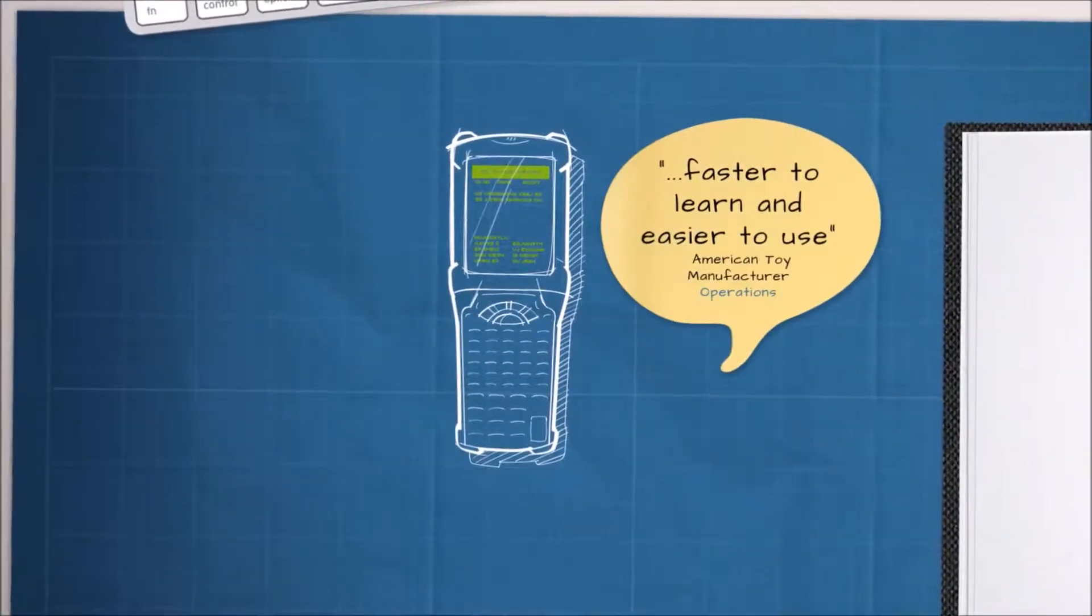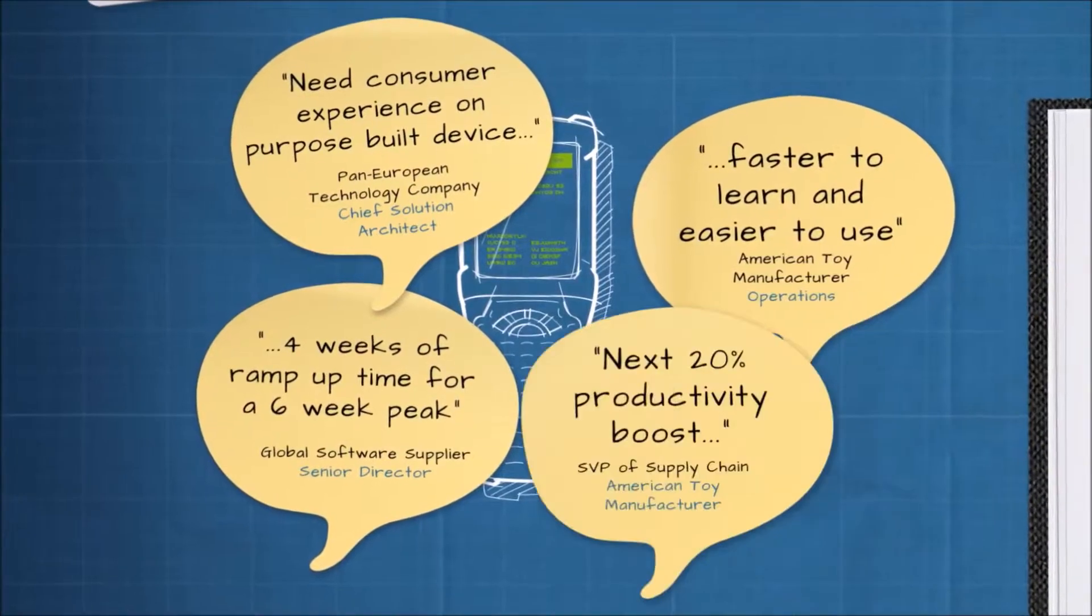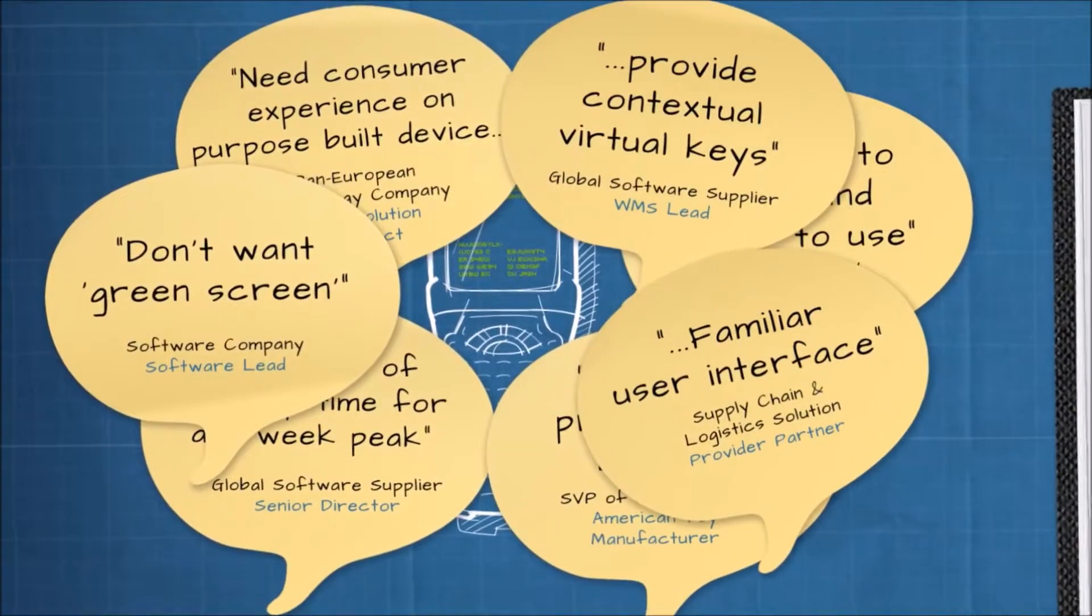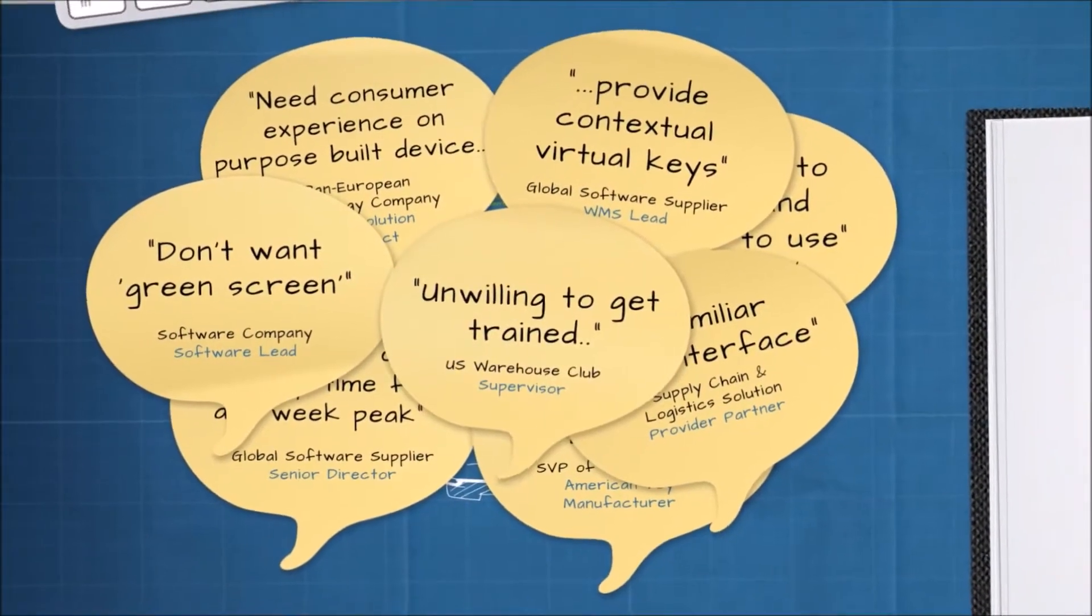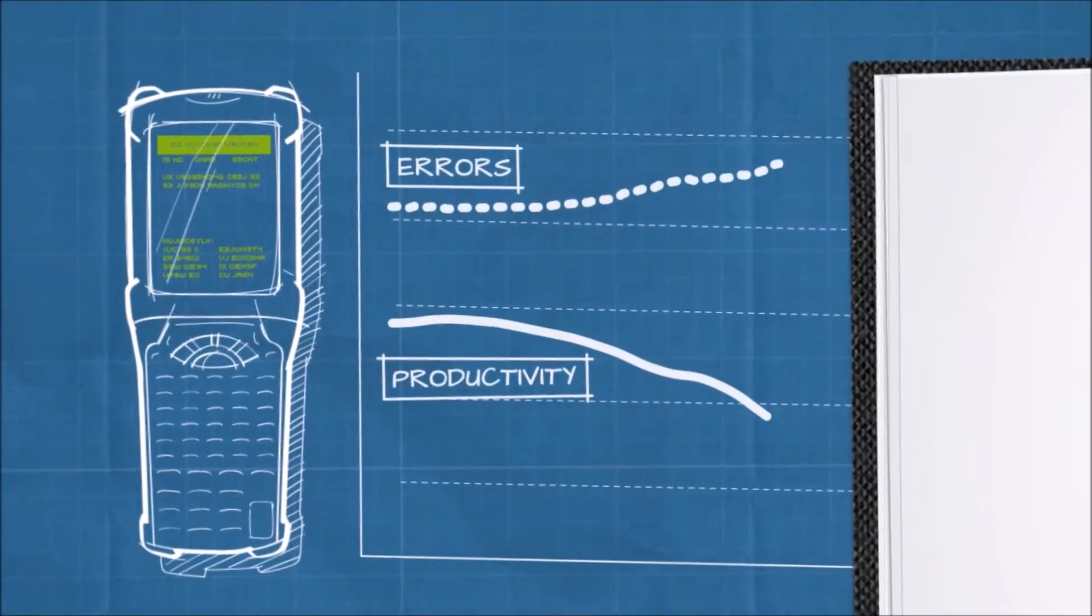And what are the customers saying? The interface is old-fashioned. Training's time-consuming and expensive. Productivity improvement is flat-lined. There's a steep learning curve. No visual hierarchy. And holy cow, the industry is ripe for a significant gain in productivity and error reduction.